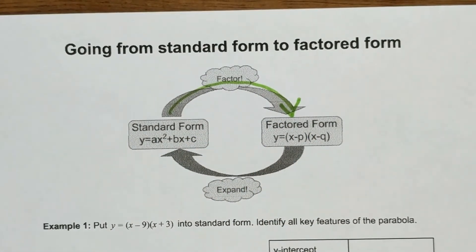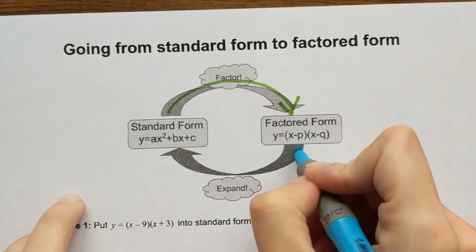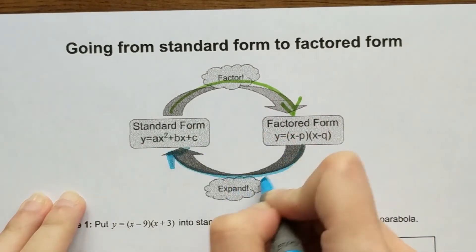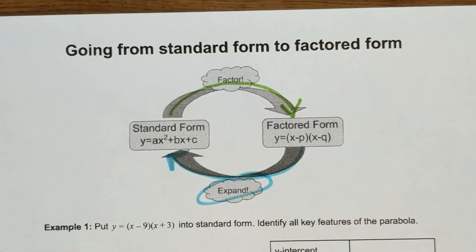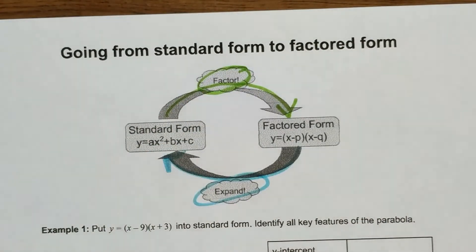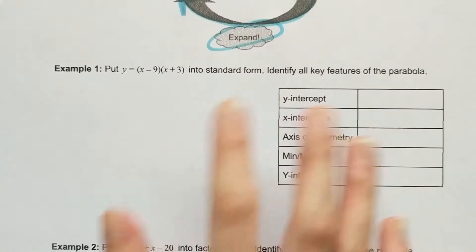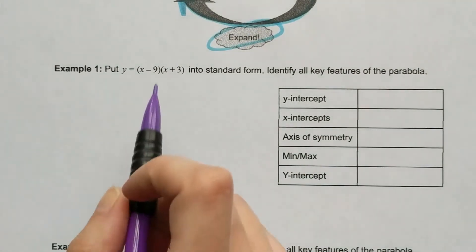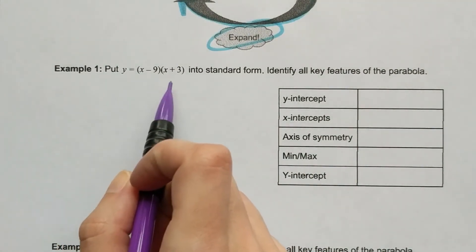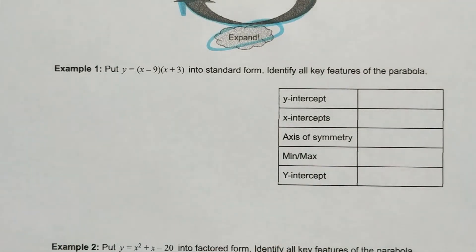In order to go from factored form to standard form, you need to expand. You're pretty capable of doing all of these things, so we're just going to do two quick examples and show you how to pull the key features of a parabola from those. First and foremost, let's put (x - 9)(x + 3) into standard form and identify all key features of the parabola.